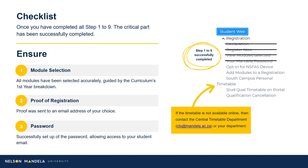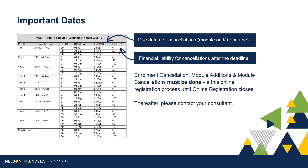Please pay careful attention to this checklist to ensure you have completed all important steps of this process. Some important dates to note: on screen is a table detailing the financial implications involved in late module cancellation. The first column indicates the period in which the module is offered, the start and end date for module cancellations, and the financial percentage liable for payment in the event of late cancellations. Please note, enrollment, cancellations, and module amendments must be done by you using this online registration process until online registration closes. Thereafter, please contact your administrative consultant for assistance.